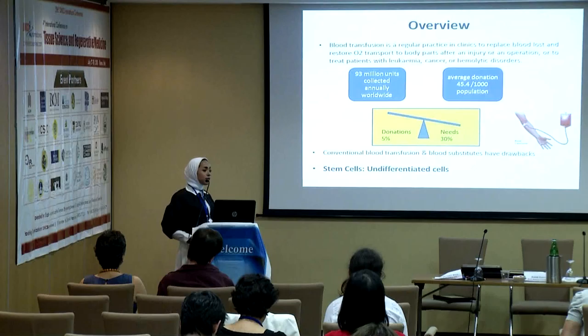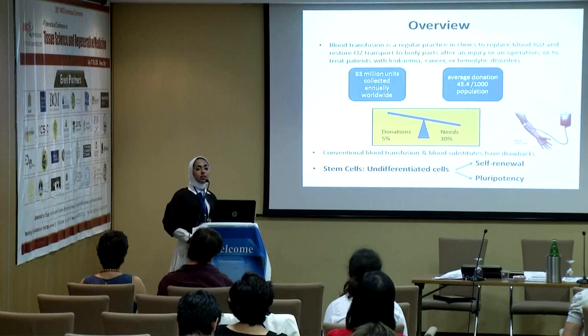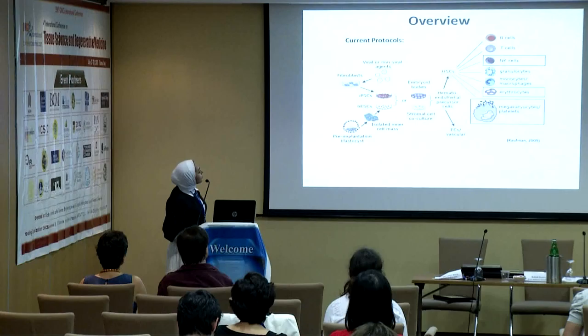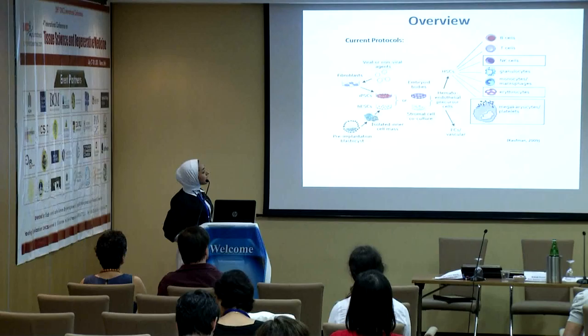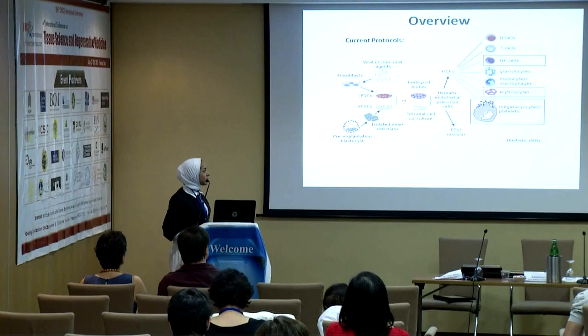This significant imbalance, in addition to conventional blood transfusion drawbacks, has encouraged scientists to think about other alternatives. Luckily, stem cells have been discovered — undifferentiated cells with two main features: self-renewal and pluripotency, which is the ability to differentiate into many cell types. The current protocols in the literature differentiating human embryonic stem cells or human induced pluripotent stem cells utilize mainly two approaches: embryoid body formation or stromal cell co-culture.